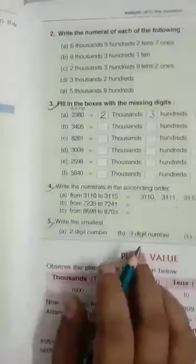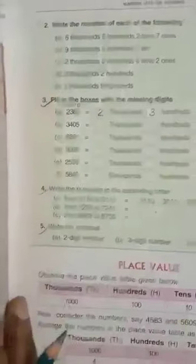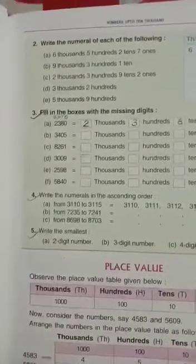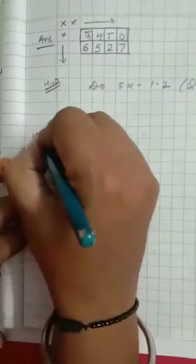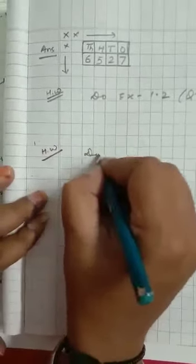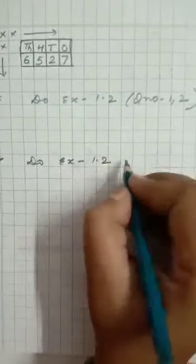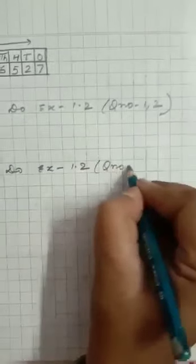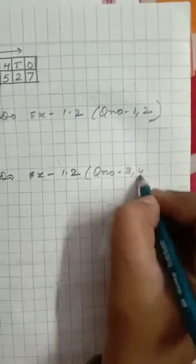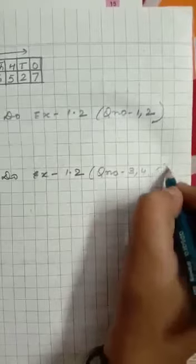So children, your homework is, do exercise 2.1, 1.2. Question number 3, 4, 5. You note it down your homework. Your homework is, do exercise 1.2, question number 3, 4, 5.